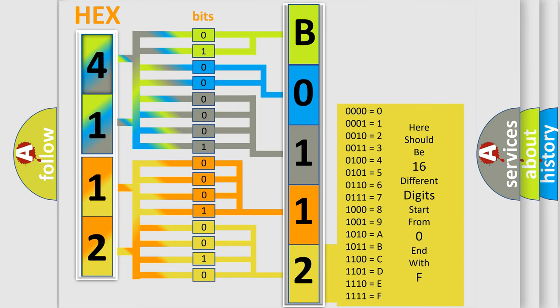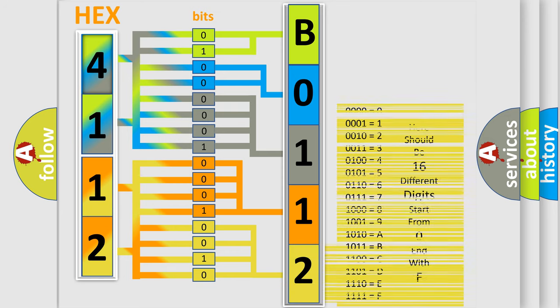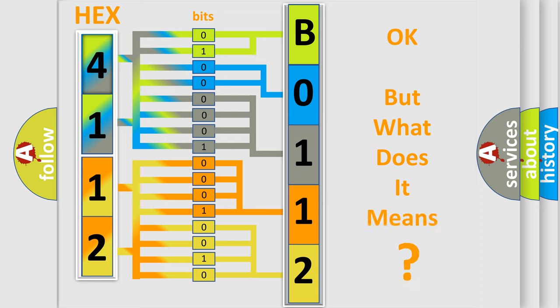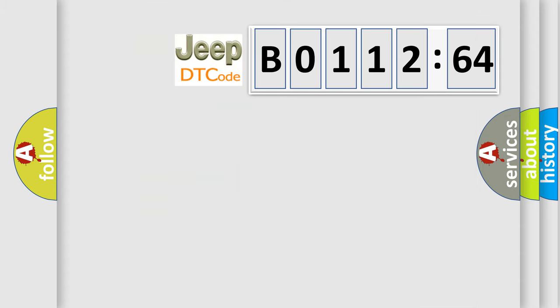We now know in what way the diagnostic tool translates the received information into a more comprehensible format. The number itself does not make sense to us if we cannot assign information about what it actually expresses. So, what does the diagnostic trouble code B011264 interpret specifically for Jeep car manufacturers?